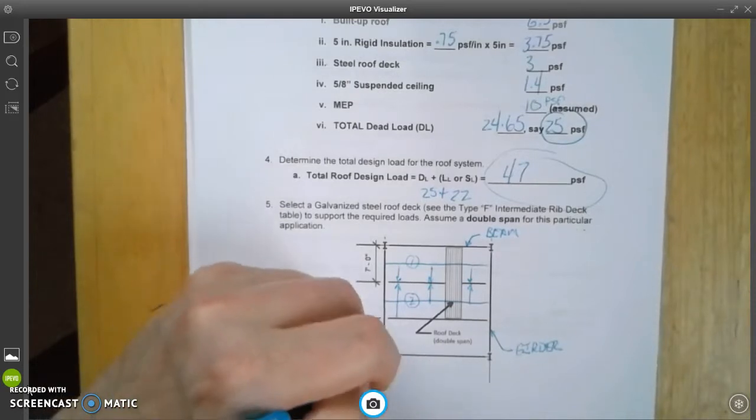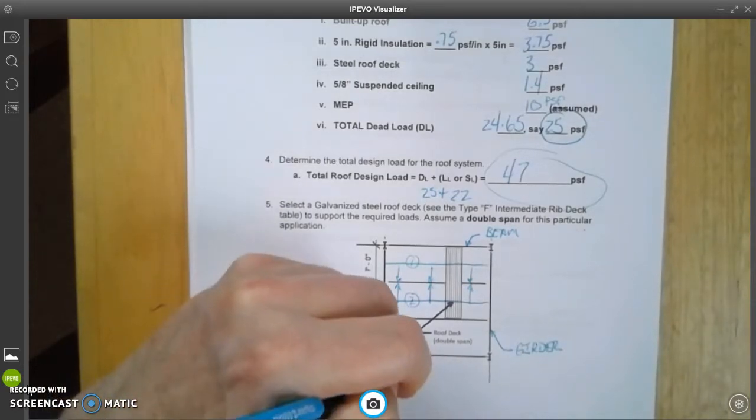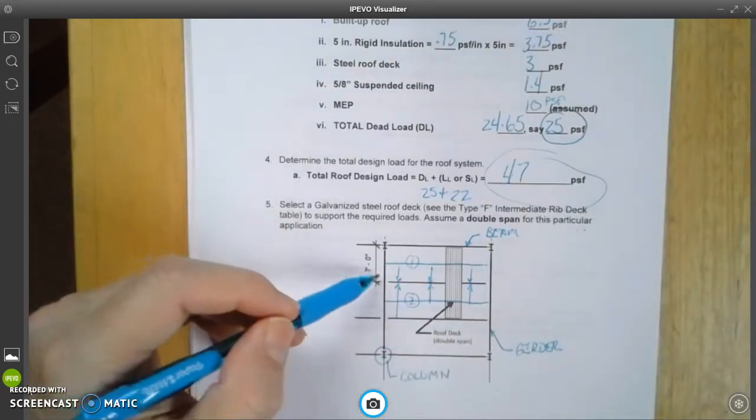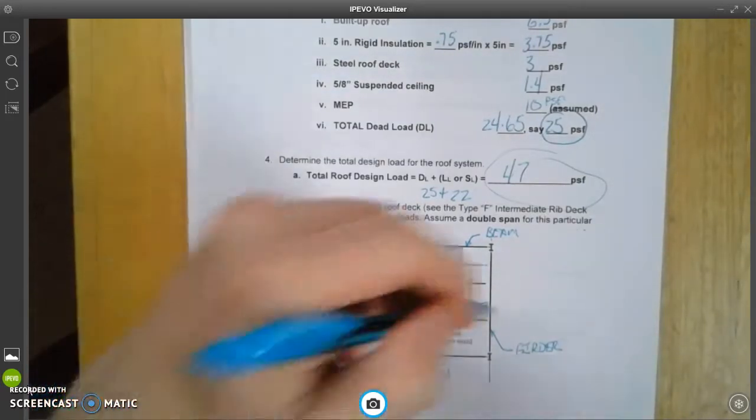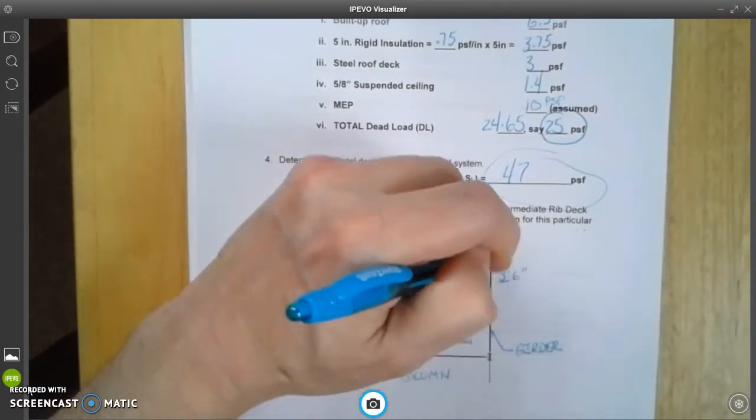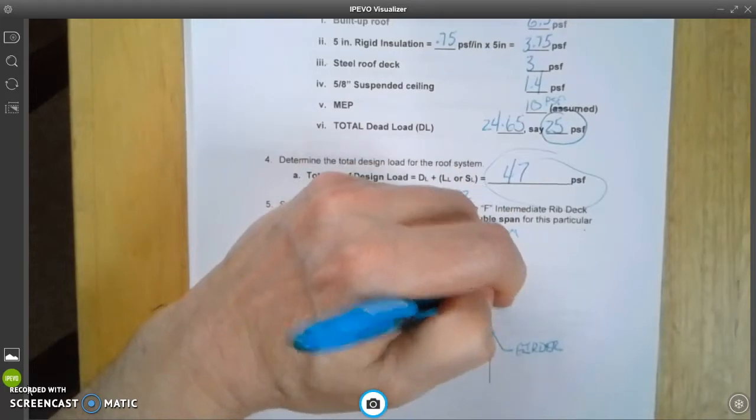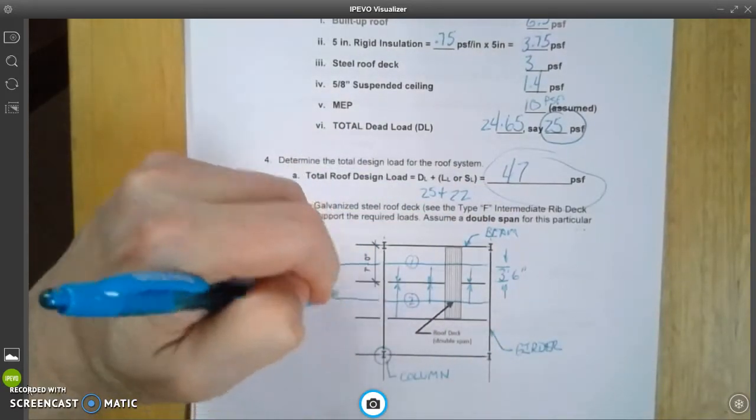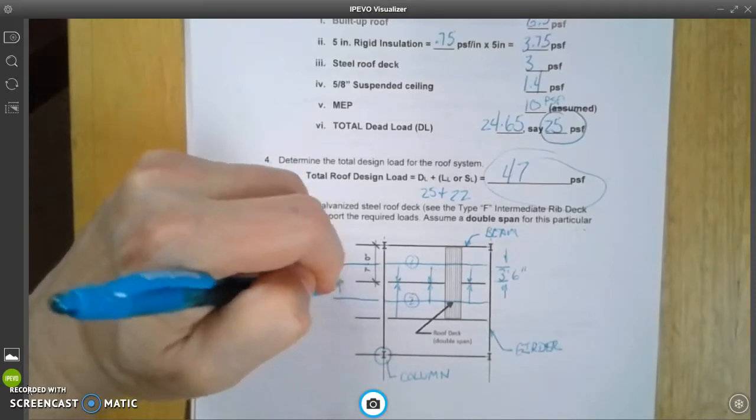And then of course we have our columns here. So half of 7 feet is 3 feet 6 inches. The distance from here to here is going to be 7 feet.